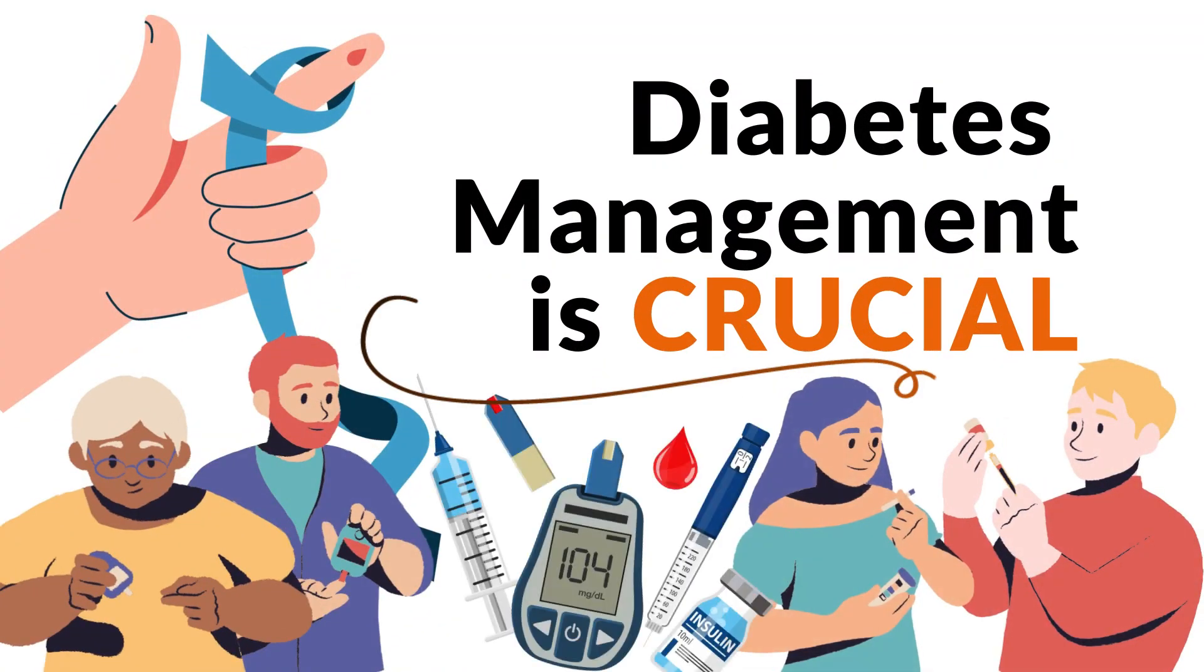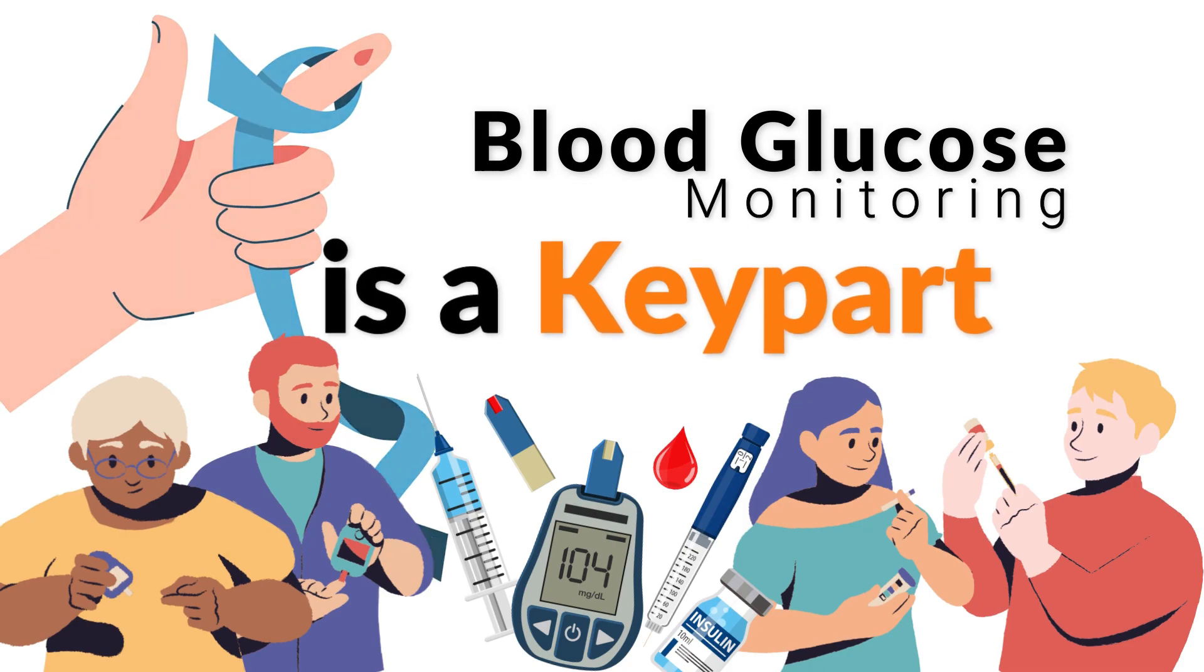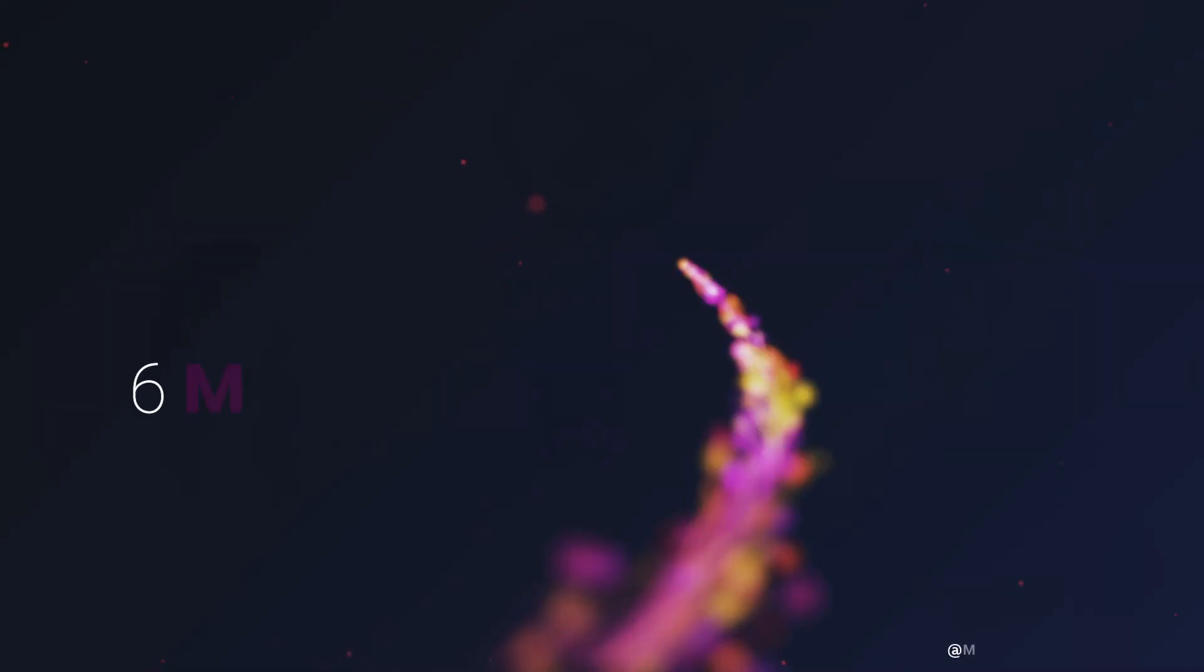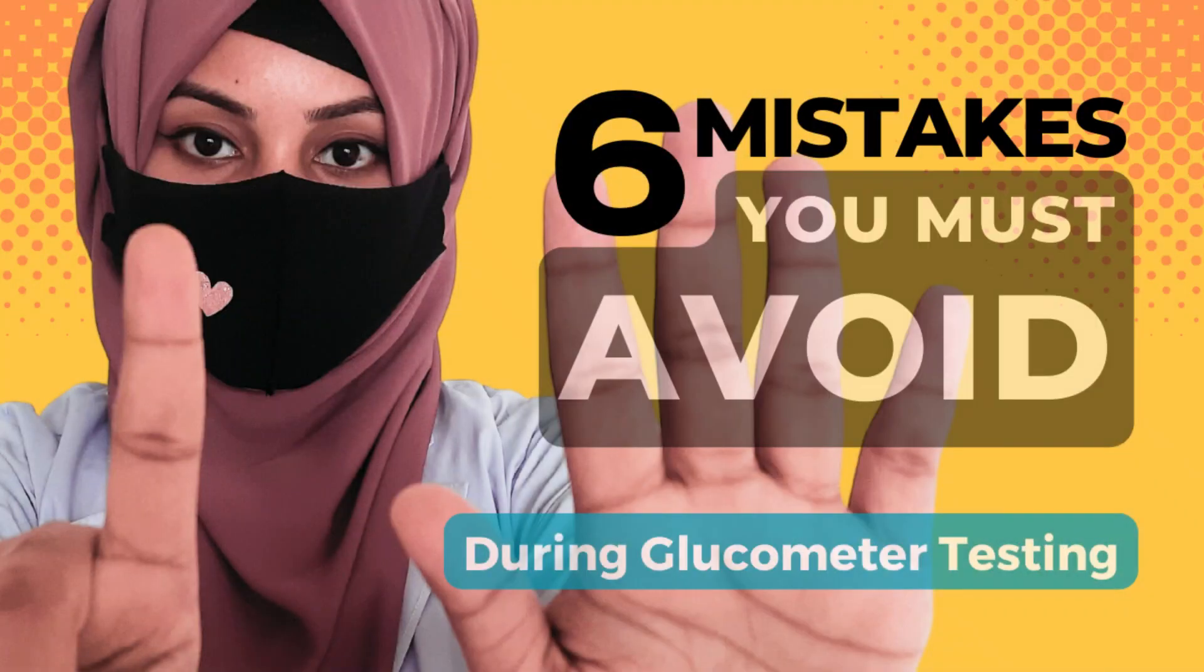Diabetes management is crucial and accurate blood glucose monitoring is a key part of it. However, there are common mistakes people make when using a glucometer. In this video, we'll highlight 6 errors and offer tips on how to avoid them to ensure accurate readings.